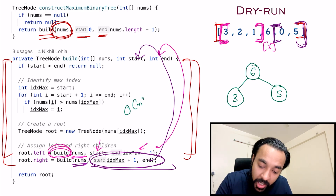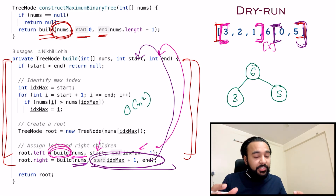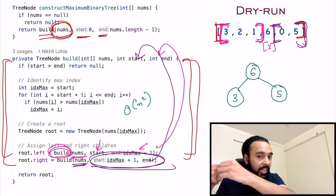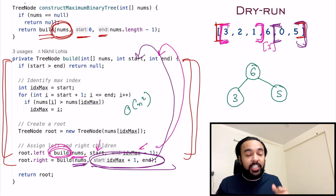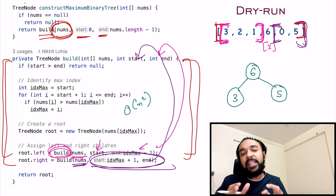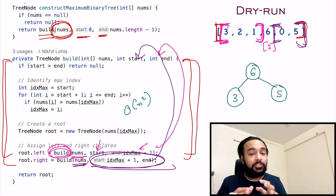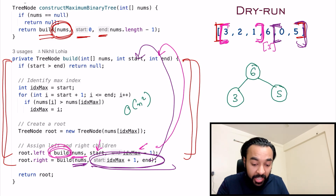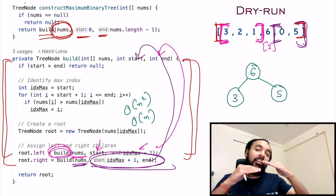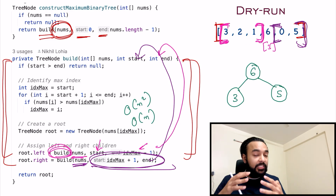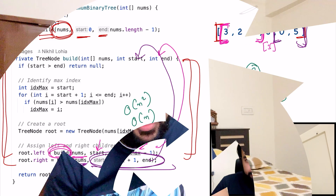The time complexity of this solution is O(n²), because in the worst case you might have to iterate through the entire array again and again to identify the greatest element. The space complexity is O(n) because you are using recursion, which will take up space in memory.